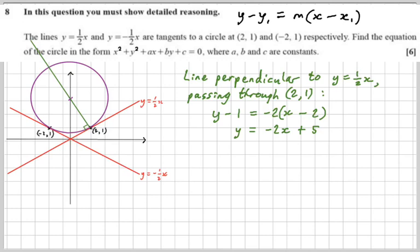and we get that the green line has equation y equals minus 2x plus 5, and that tells us that the y-intercept is 5, and because we've got a good diagram, we know that, therefore, the centre of the circle must be at that point there, 0, 5. Brilliant. We're doing really well.